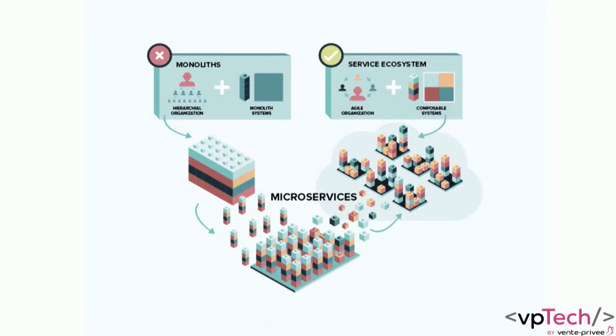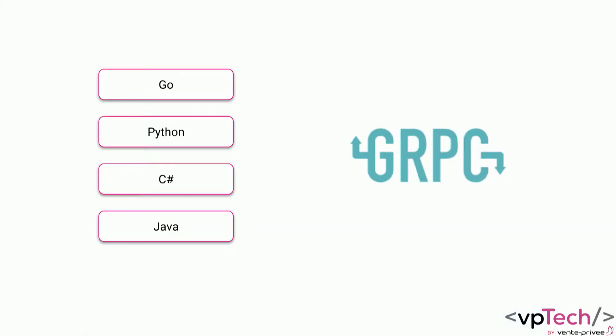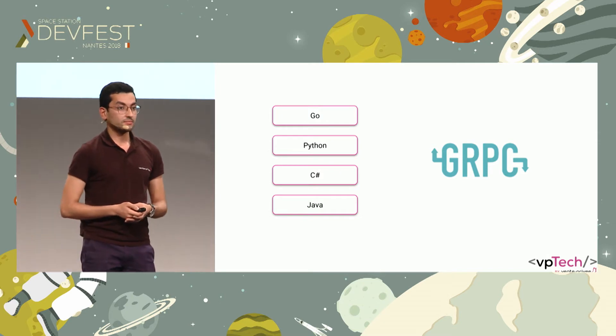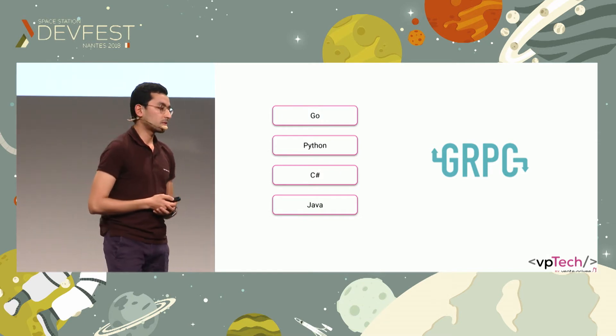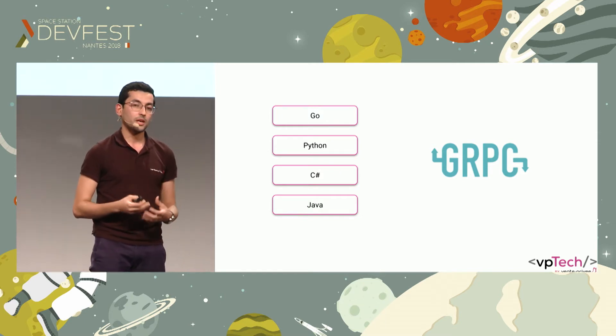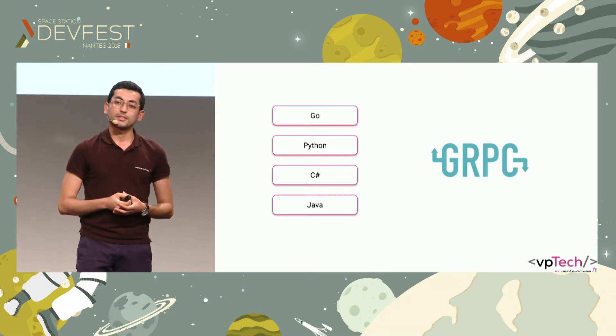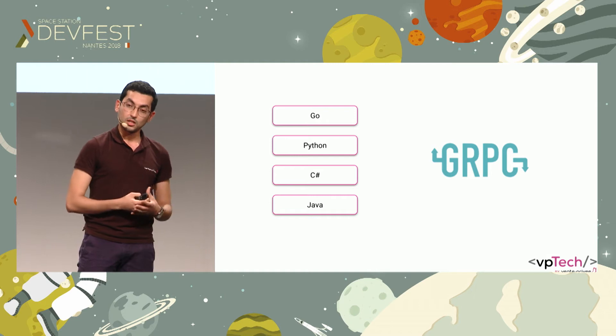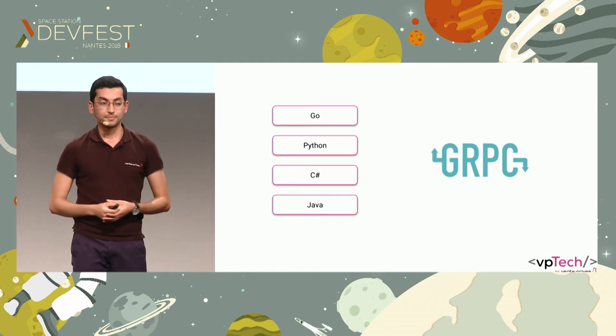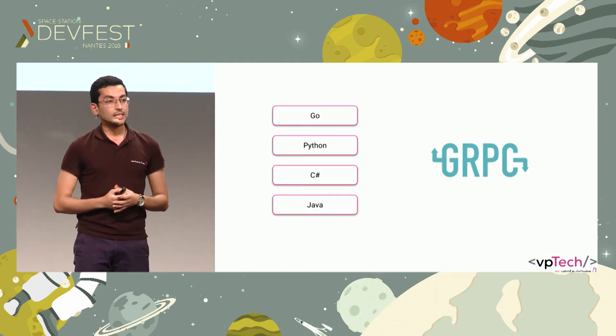We started splitting it into multiple smaller microservices, microservices that were written in various languages. We had Go, Python, C-sharp, sometimes Java. And the question we were asking ourselves is: how would we make all these microservices, built in various languages and technologies, communicate with each other? And that's where gRPC came to the rescue.